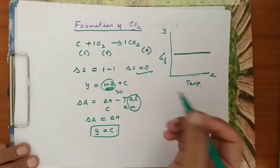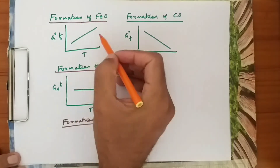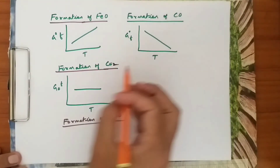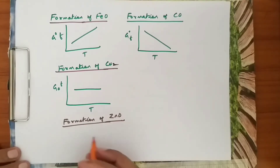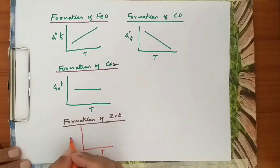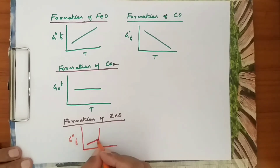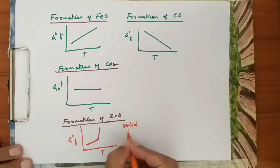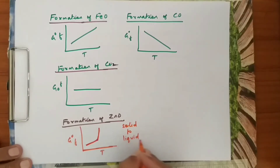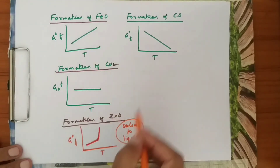So we have seen three types: positive slope, negative slope, and a parallel line. A fourth type can be seen in the formation of zinc oxide — a positive slope with a sudden spike. This spike occurs whenever there is a change in phase from solid to liquid. When the solid gets converted to liquid, we see a positive slope with a sudden spike, as in the case of ZnO formation.